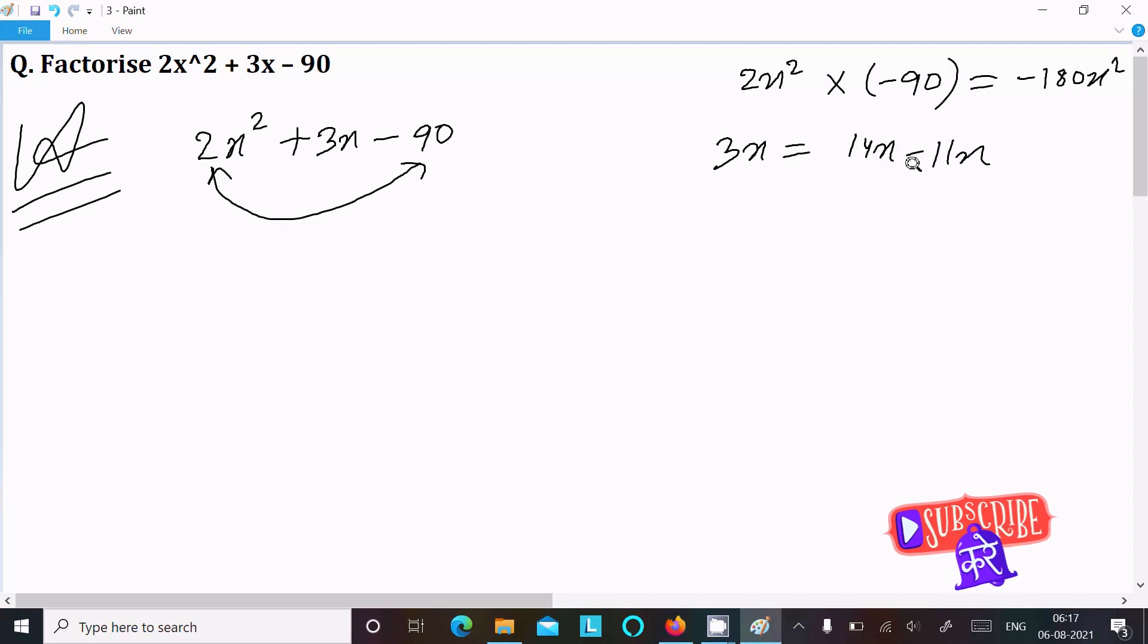minus 11x. If you subtract, it equals 3x. And when you multiply 14x into -11x,